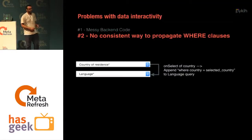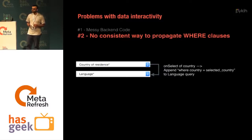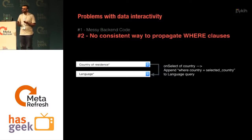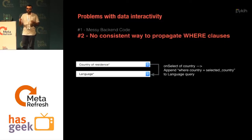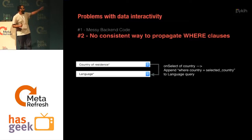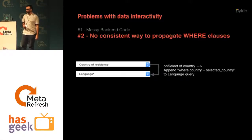The next problem with data interactivity is how do you propagate where clauses? Since we have the query right in the front-end, the front-end developer can propagate where clauses on the onchange event. It's as simple as changing the PyQuery object of the drop-down for languages.